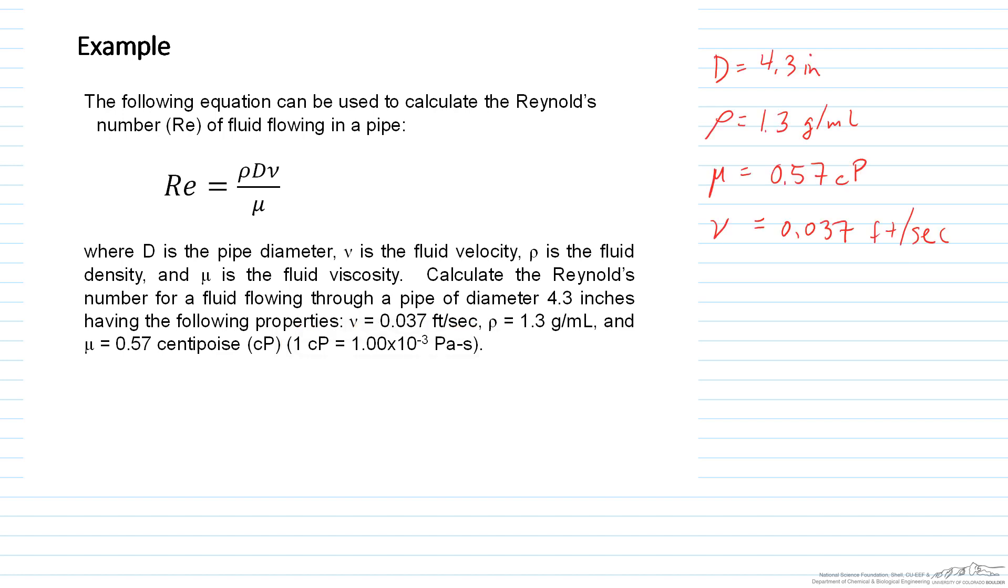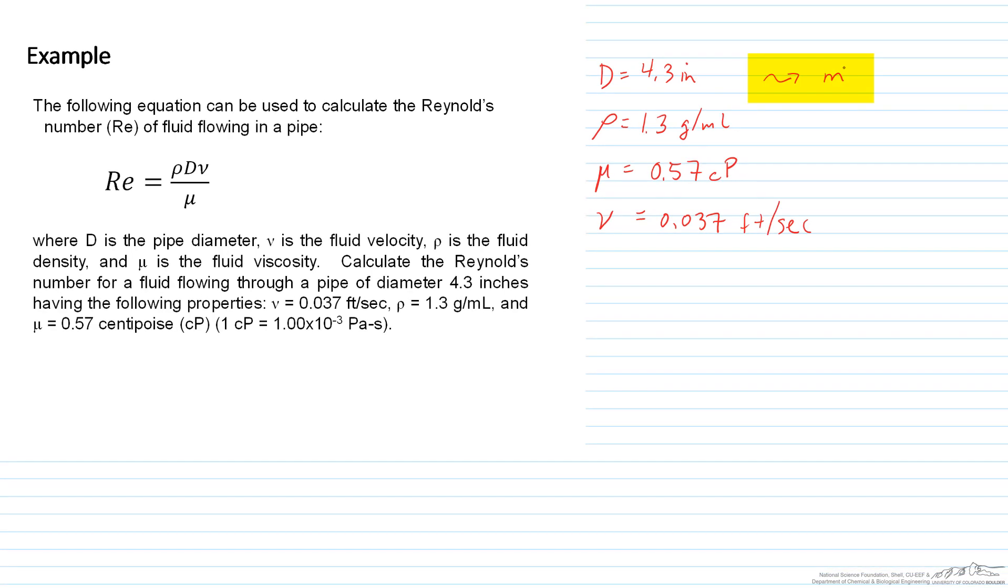So we have all our basic information written down here, and I'm just going to write down my basic approach. I'm going to choose to convert to SI units, just because I'm used to working in SI units. So I'm going to take my diameter in inches and convert that ultimately to meters, take my grams per milliliter and convert that to kilograms per meter cubed, take my centipoise and convert that to pascal seconds.